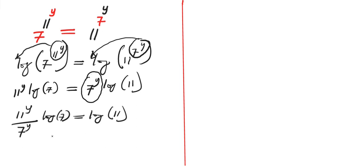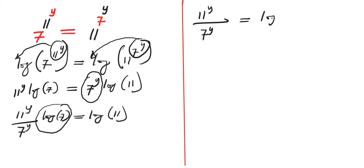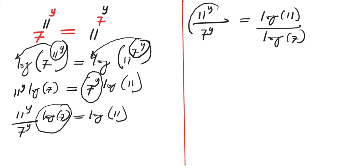Having done this, the next step is to also divide both sides by log 7, giving us 11^y divided by 7^y equals to log 11 divided by log 7. This left side can be expressed as (11 over 7) to the power of y.